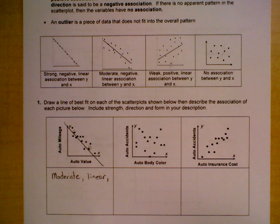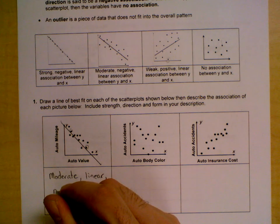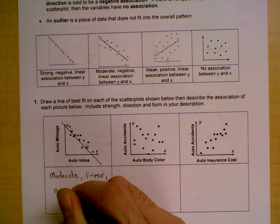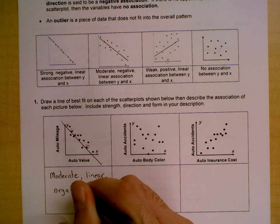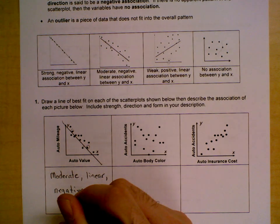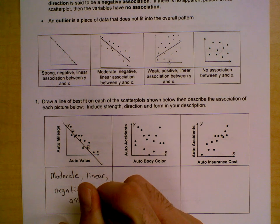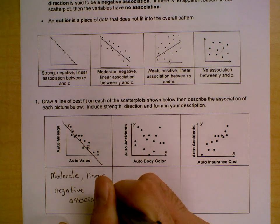Also notice that my line has a slope, a negative association.